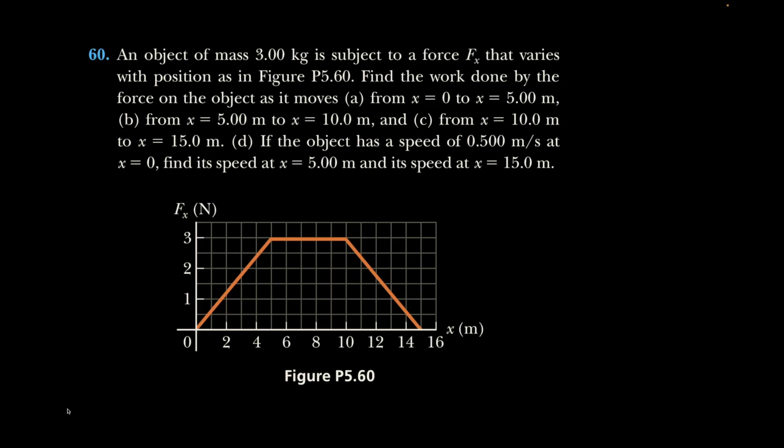Question 60 is very similar, but they go deeper and ask us to figure out speed. This brings us to the work-kinetic energy theorem: net work equals change in kinetic energy. They also talk about force x, meaning that even if the force itself is not directed along x, they are giving us the component of it. So we don't need to worry about cosines and whatnot. It varies with position.